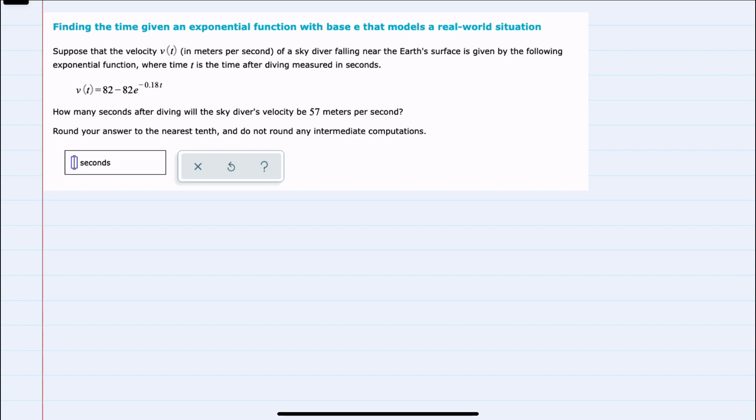Here our real-world situation is the equation v of t, which represents a skydiver's velocity after some time t in seconds. So we're given our function and we're asked after how many seconds will the skydiver's velocity be 57 meters per second.